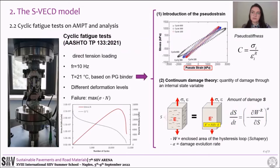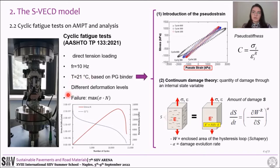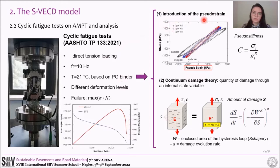Then, fatigue tests are conducted in direct tension mode of loading at a frequency of 10 Hz. The test temperature, based on the performance grade of the binder, resulted in 21 degrees Celsius for all the mixes. Different deformation levels are set in order to obtain different durations of the test. The number of cycles at failure corresponds to the number at which the product of the applied stress and the number of cycles reaches a maximum, as can be seen in the figure. The fatigue analysis is based on pseudo strain instead of physical strain, because this allows applying elastic solutions to a viscoelastic material.